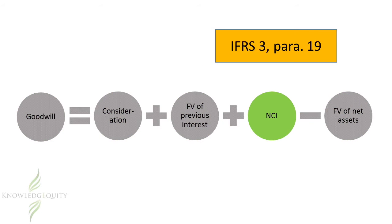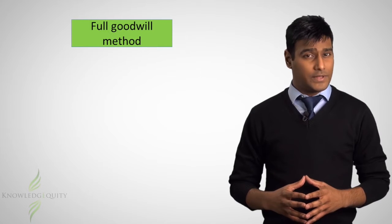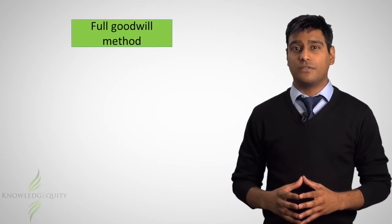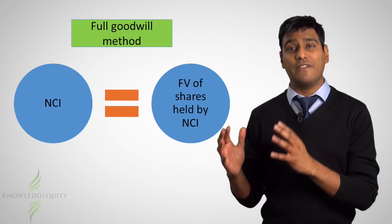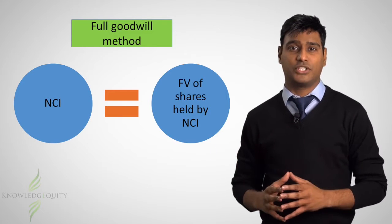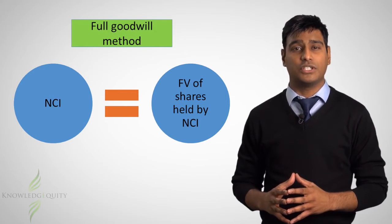IFRS 3 paragraph 19 allows a choice for the measurement of non-controlling interest — that is, the full goodwill method or the partial goodwill method. If the entity chooses the full goodwill method, then it would measure the non-controlling interest using the fair value of shares held by the non-controlling interest shareholders.